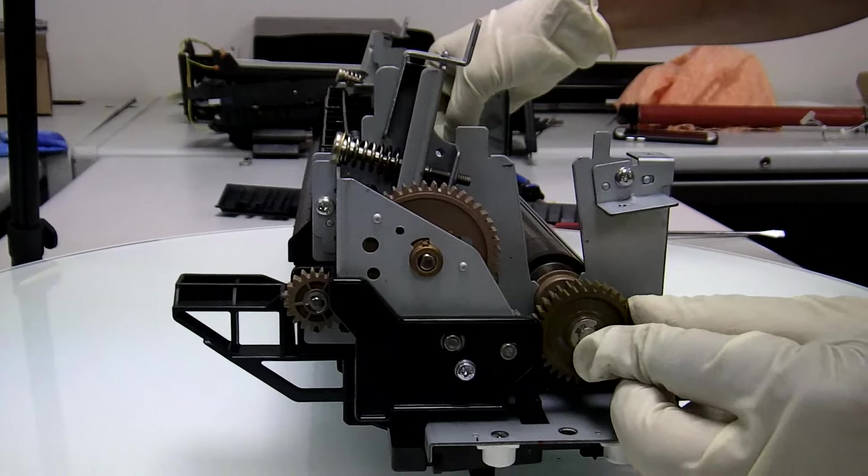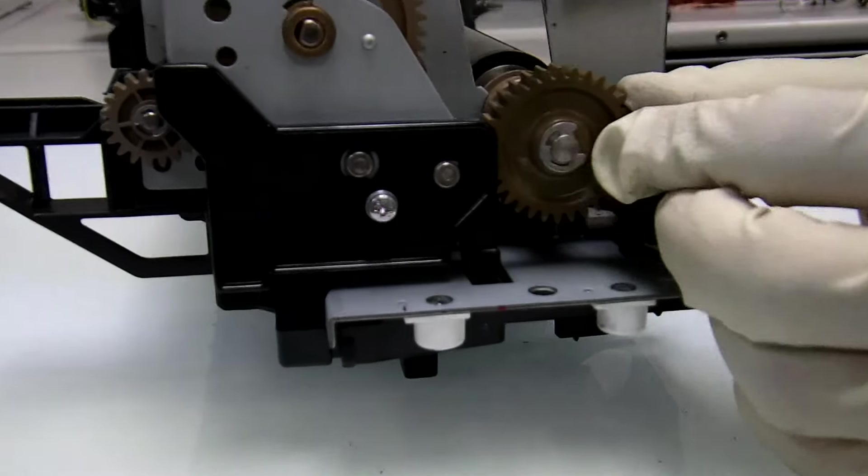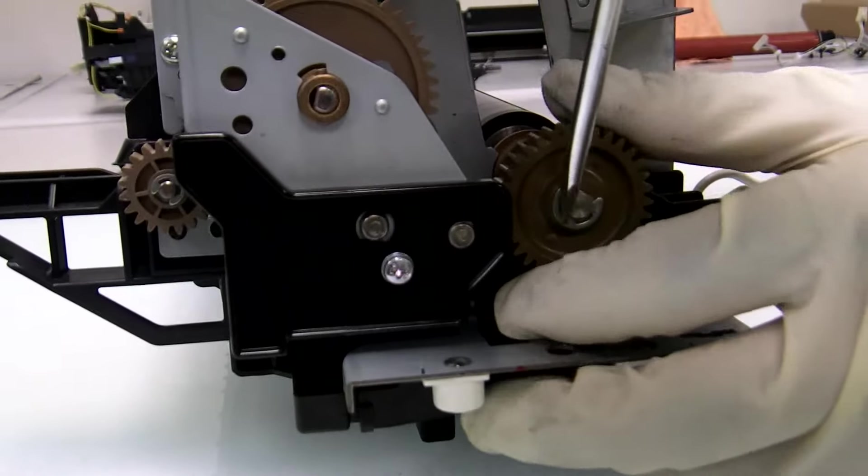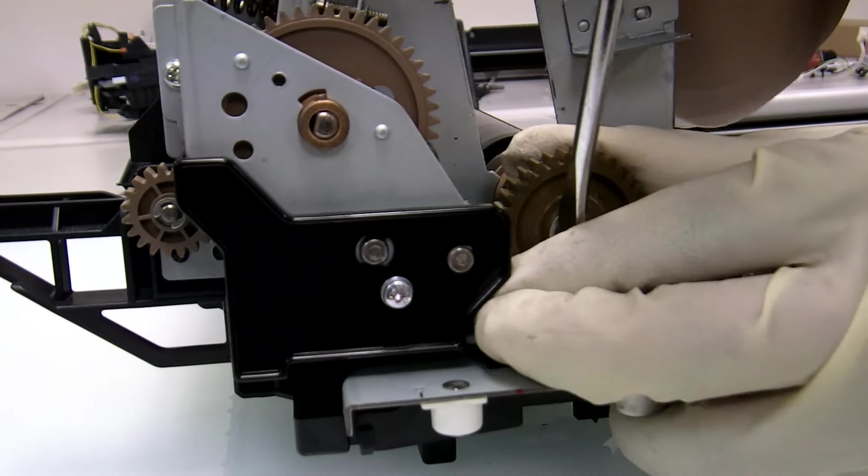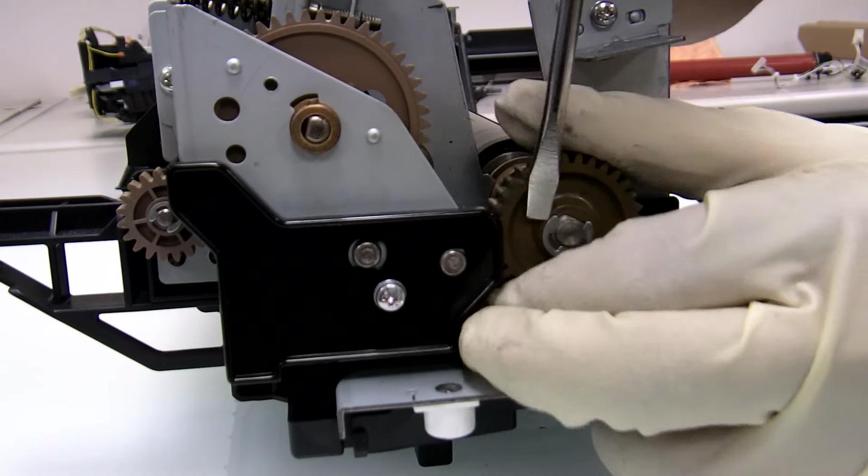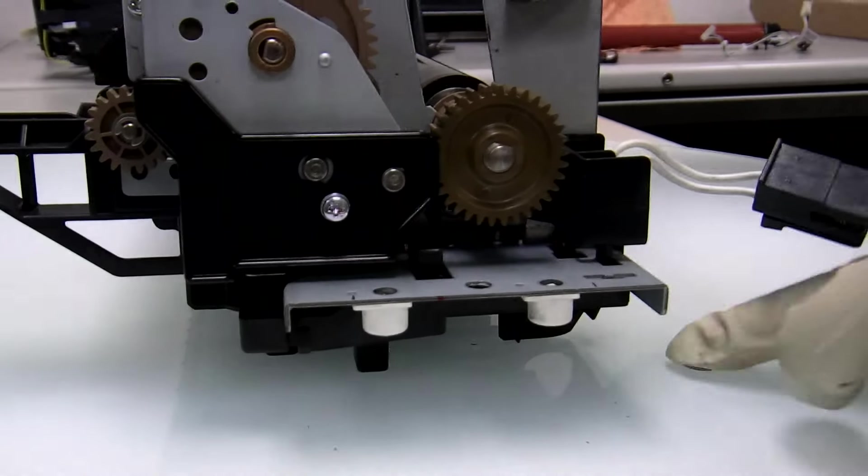Now let's remove the pressure roller. Start off by removing the C-clip on the gear. Save the C-clip.